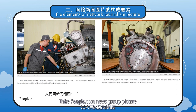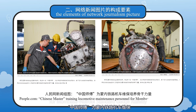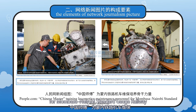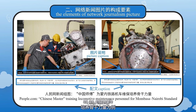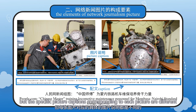Take the people.com news group picture 'Chinese master training locomotive maintenance personnel for Mombasa-Nairobi Standard Gauge Railway' as an example. Different picture captions all introduce the news content, but the specific picture captions corresponding to each picture are different.